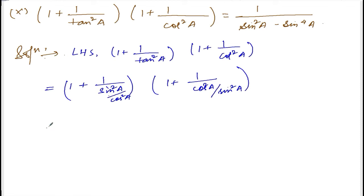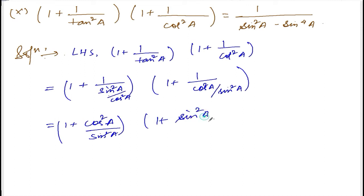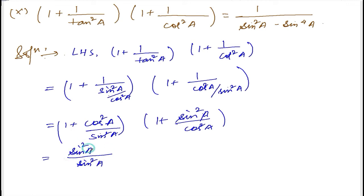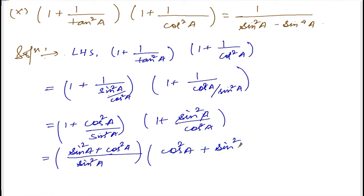Now 1 plus cos squared a divided by cos squared a, and 1 plus sin squared a going up as sin squared a divided by cos squared a. After this, take the LCM. LCM will be sin squared a, so sin squared a plus cos squared a, and for the other factor cos squared a plus sin squared a divided by cos squared a.